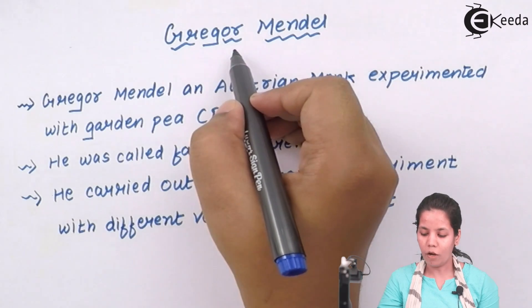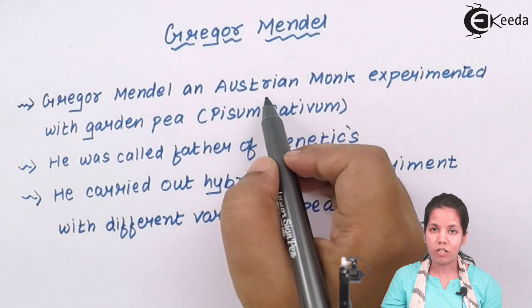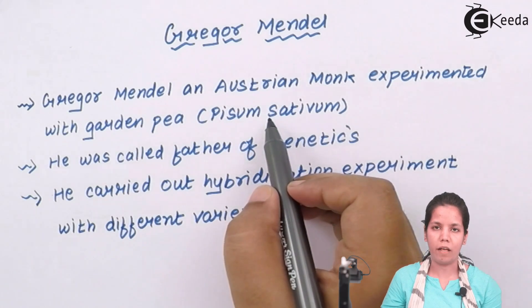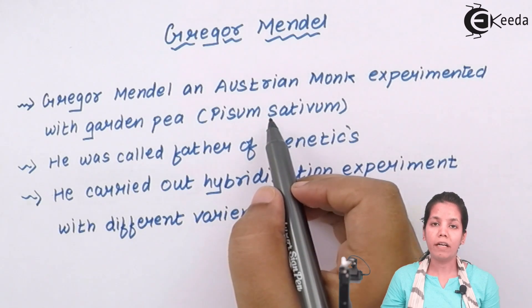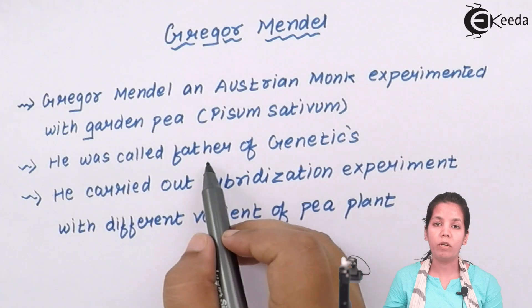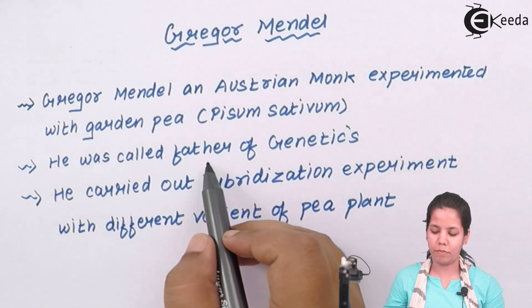Gregor Mendel was basically an Austrian monk, and he spent all his life doing experiments on garden pea — the normal pea plant, the green-colored one — with the scientific name Pisum sativum. When Mendel chose the pea plant, there were many reasons: it has a shorter duration of life, and it has multiple different characteristics — it produces the dominant trait, the recessive trait, and even the progeny can show different characteristics. He was termed the father of genetics because Mendel laid down the various terms used in genetics — heterozygous, homozygous, dihybrid, progeny, genotype, phenotype — all terms given by Mendel.